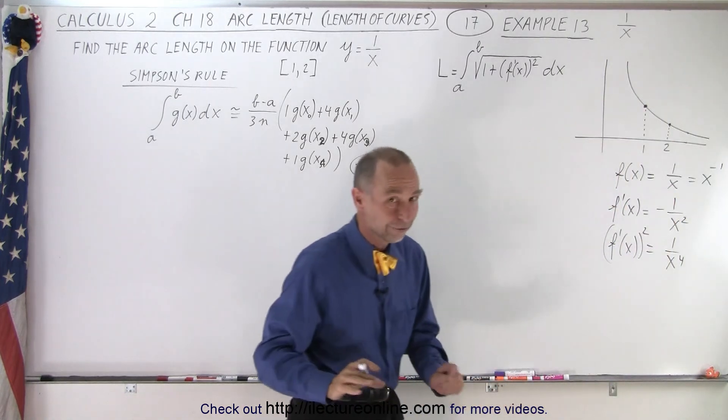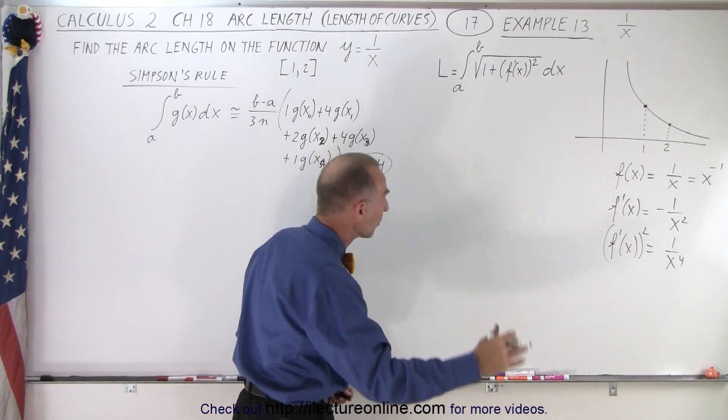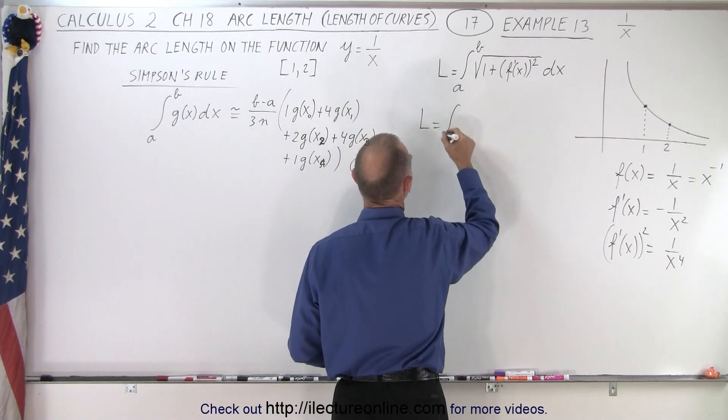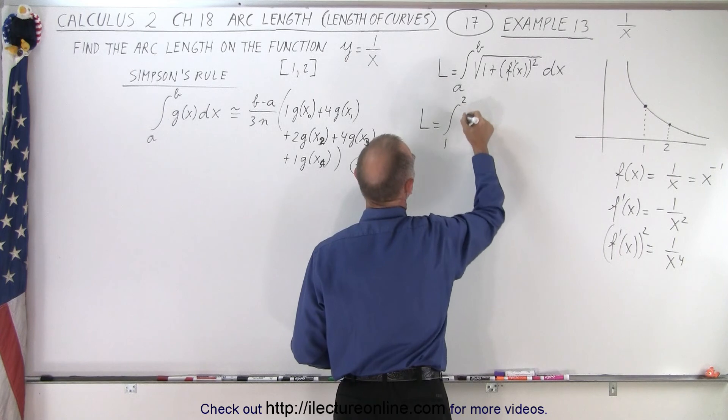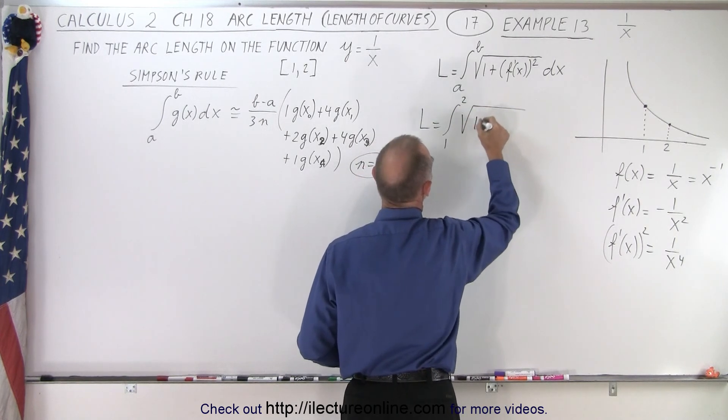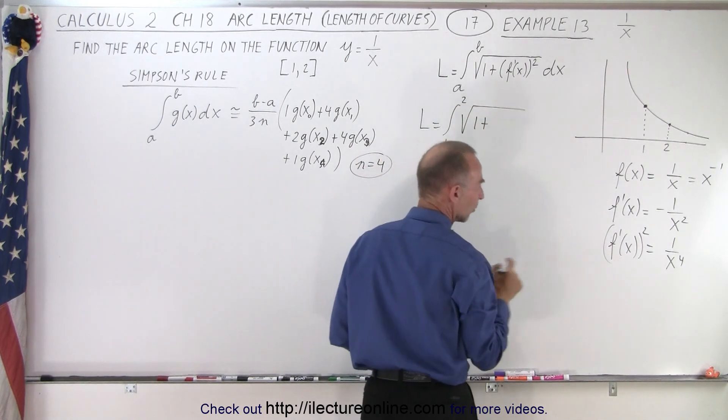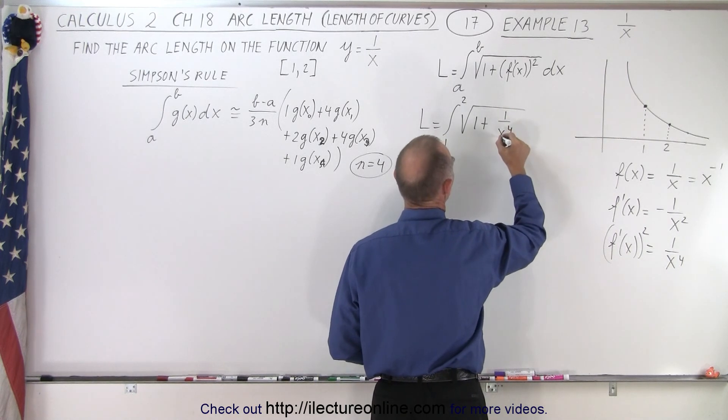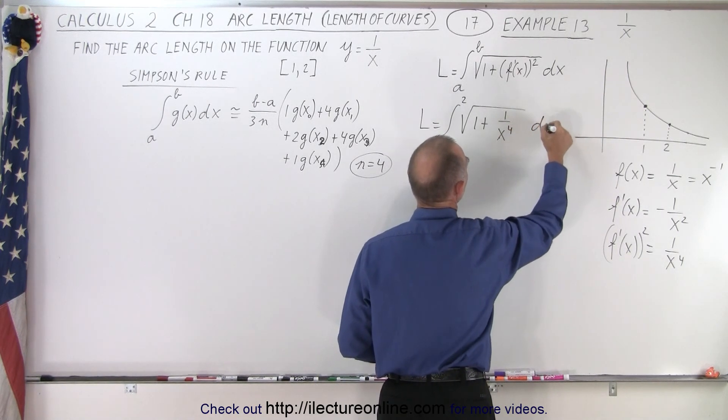So again, so far, things look very simple and very easy. We plug that into our integral. So we say that the length is equal to the integral from 1 to 2 of the square root of 1 plus the derivative of the function squared, which is 1 over x to the fourth, times dx.